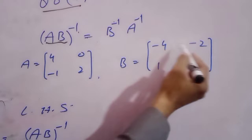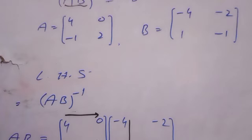A matrix हमारे पास है: 4, 0, minus 1, 2. And B equal to minus 4, minus 2, 1, and minus 1.